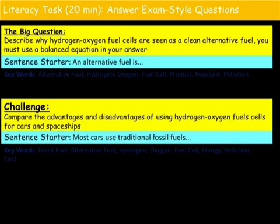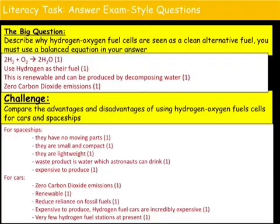Here are two example examination questions: one looking at why hydrogen and oxygen fuel cells are a clean alternative fuel, and the second looking at why they might be helpful for cars and spaceships. For the first question, looking at why hydrogen and oxygen fuel cells are a clean alternative fuel: the balanced equation is 2H₂ plus O₂ makes 2H₂O. Hydrogen is a fuel which is renewable, as it can be produced from decomposing waste, and there are no carbon dioxide emissions. For the second question, looking at advantages and disadvantages: in spaceships, there are no moving parts, they are small and compact, they are lightweight, and the waste water can be used for drinking.